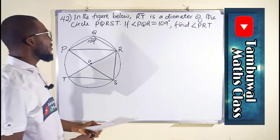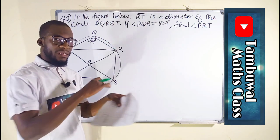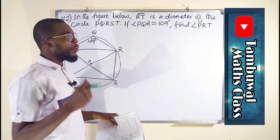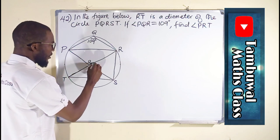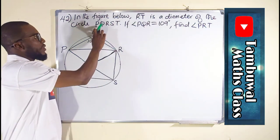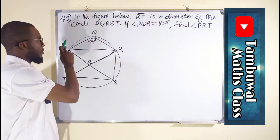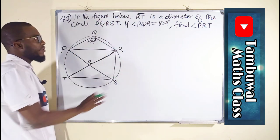It's a diameter of the circle. Remember, a diameter is that line that divides the circle into two equal parts. So this is the line we are referring to. From T to R is the diameter of this cycle PQRST. Around the cycle, we are referring to the circle entirely.